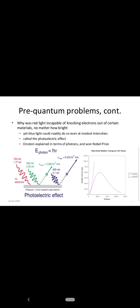Yet blue light could readily do so even at modest intensities. This was called the photoelectric effect. It was not possible to explain the photoelectric effect using classical mechanics. This effect was explained considering the formulations of quantum mechanics only. Classical mechanics could not explain this effect. Einstein explained this effect in terms of photons and won the Nobel Prize, where the energy of each photon is given by h nu.